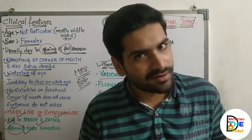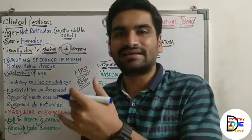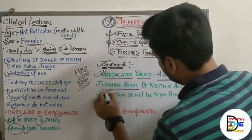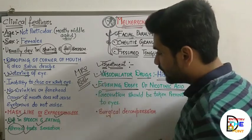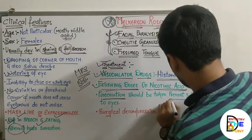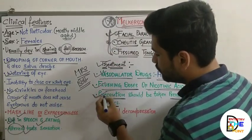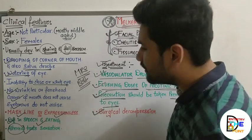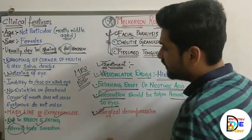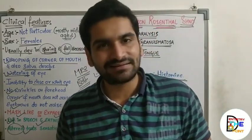Moving on to treatment — there is no exact treatment for Bell's palsy because there is no exact etiology known. Various vasodilator drugs like histamine are tried. Flushing doses of nicotinic acid have shown great and effective results in patients. Precaution must be taken to avoid infection in the eyes, since the patient cannot close their eyes. Lastly, surgical decompression of the compressed nerve is also an effective mode of treatment.